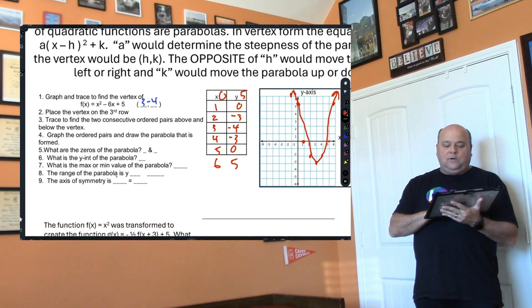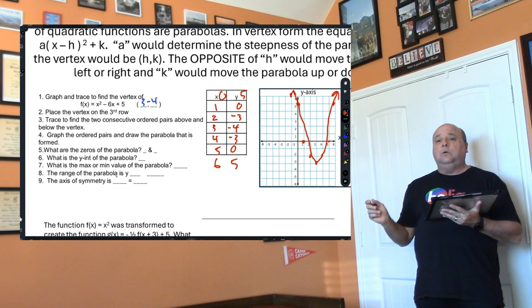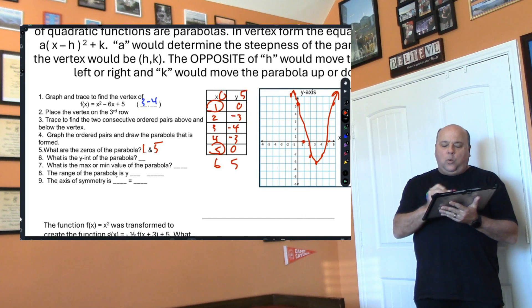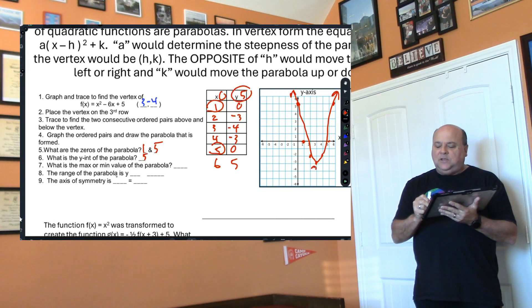Now let's label it. What are the zeros of the parabola? The zeros are the numbers with zero to the right—they're 1 and 5. The y-intercept starts with zero, so that's 5. The max or min—the vertex—is my minimum, and the minimum is -4.